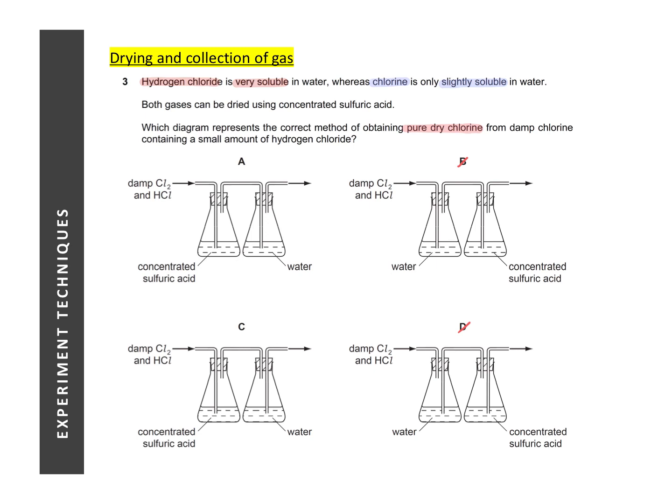The next thing that we need to do is then to dry the chlorine gas. In this question there's only one drying agent, which is concentrated sulfuric acid. In order to know which answer is correct, we then need to recall the setup required for the use of concentrated sulfuric acid as the drying agent.